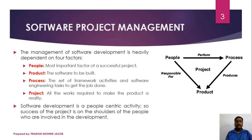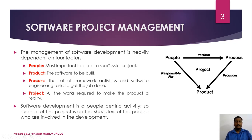The four factors that will affect the management of a software development are People, Product, Process, and Project. These are called the four P's of software project management because all four terms start with the letter P. People means the persons who are associated with the development activities of a software project — they are the most important factor of a successful project.